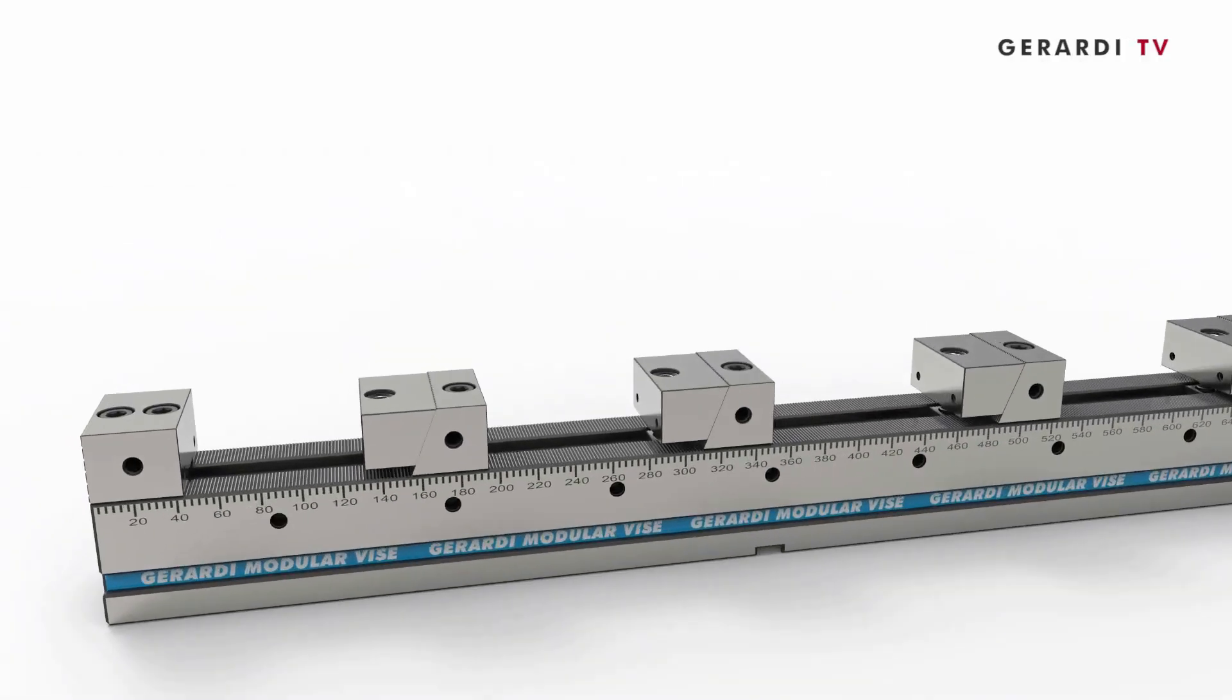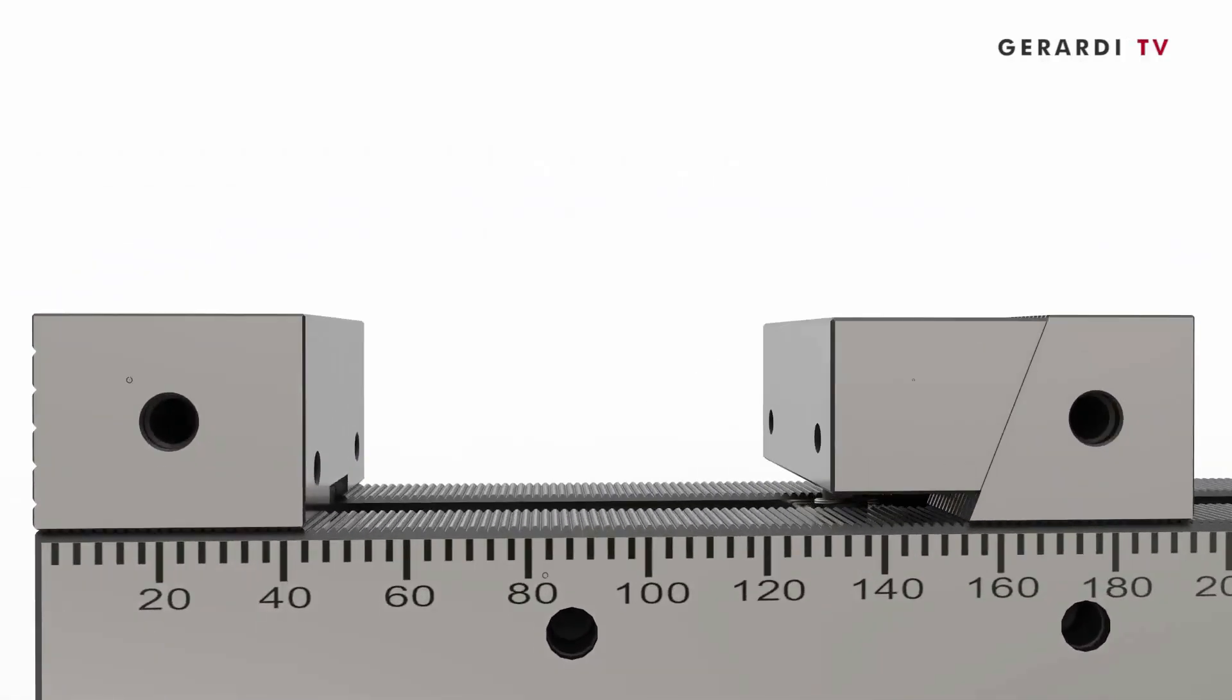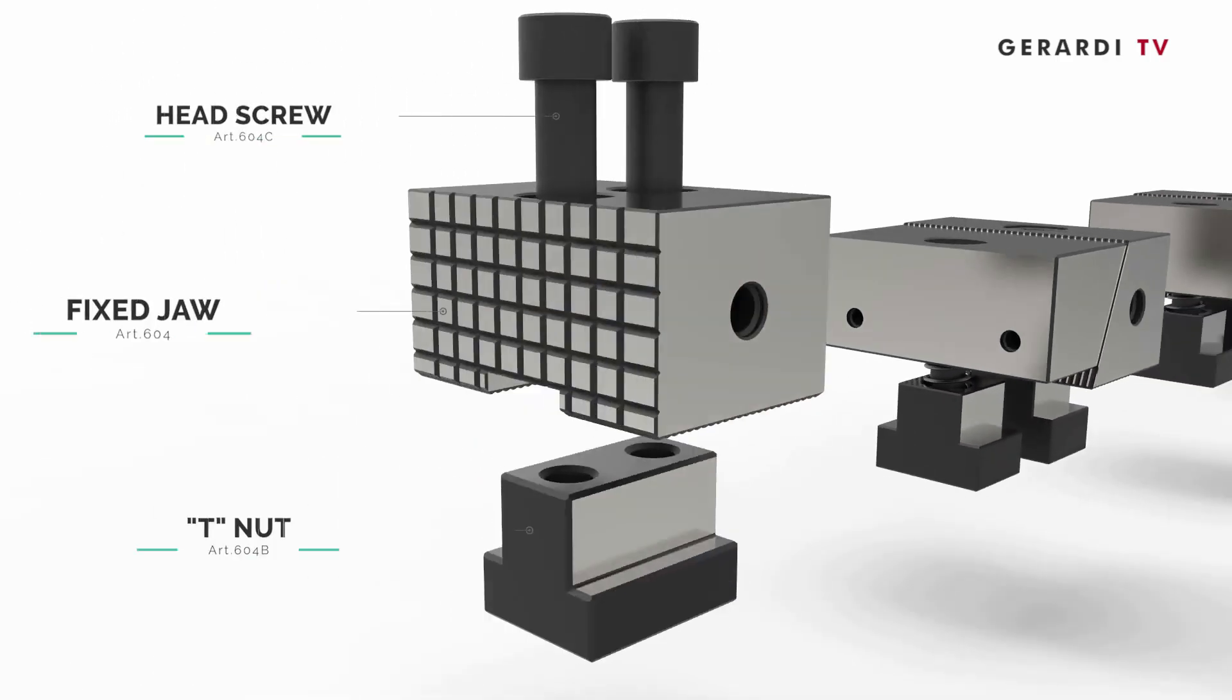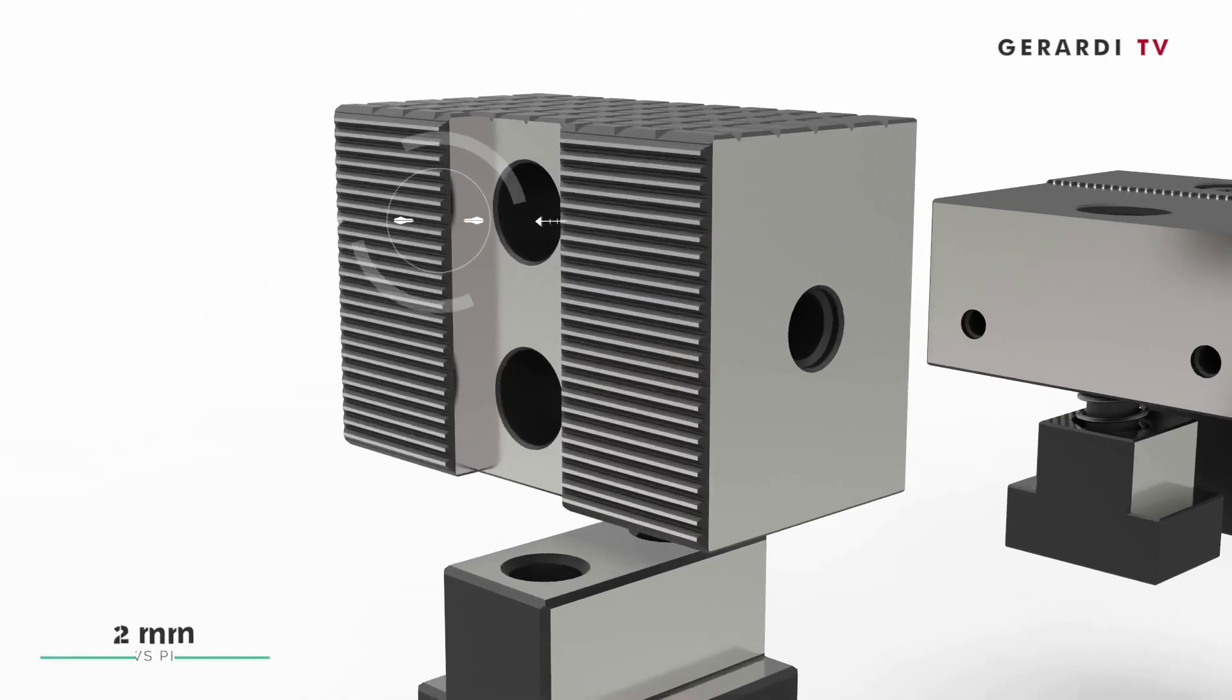The multi-flex series are the result of the combination of three vise components: movable jaws, fixed jaw, and vise base body. Such couplings are allowed thanks to the ground rack 2mm pitch teeth on both the base and the fixed jaws.